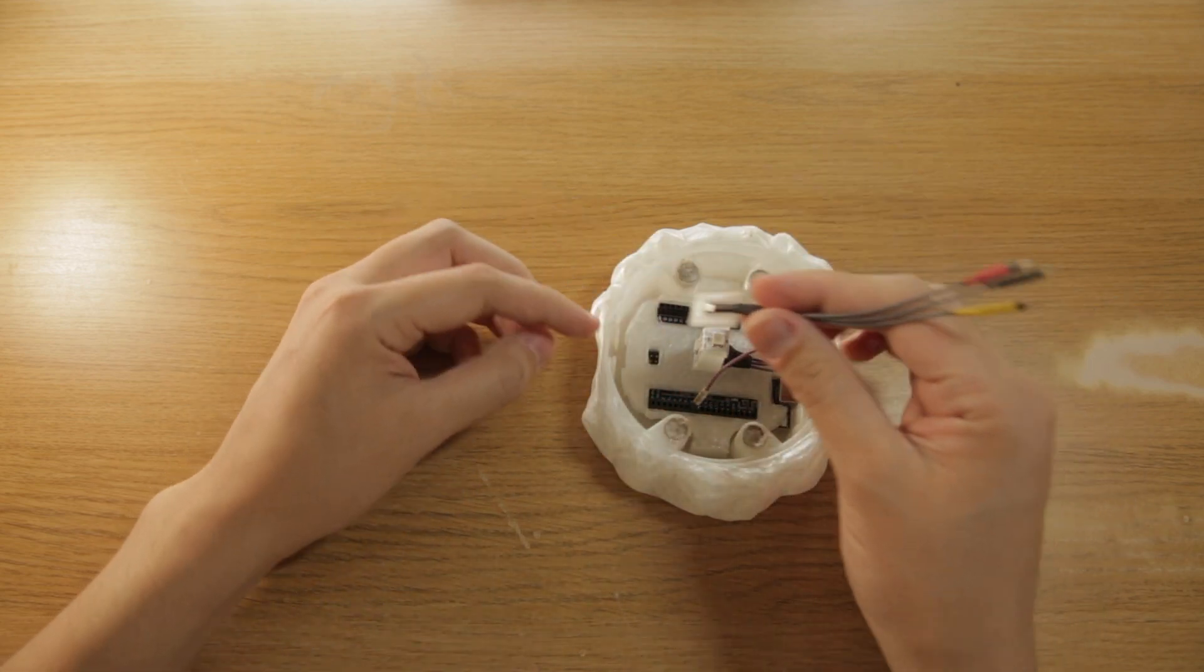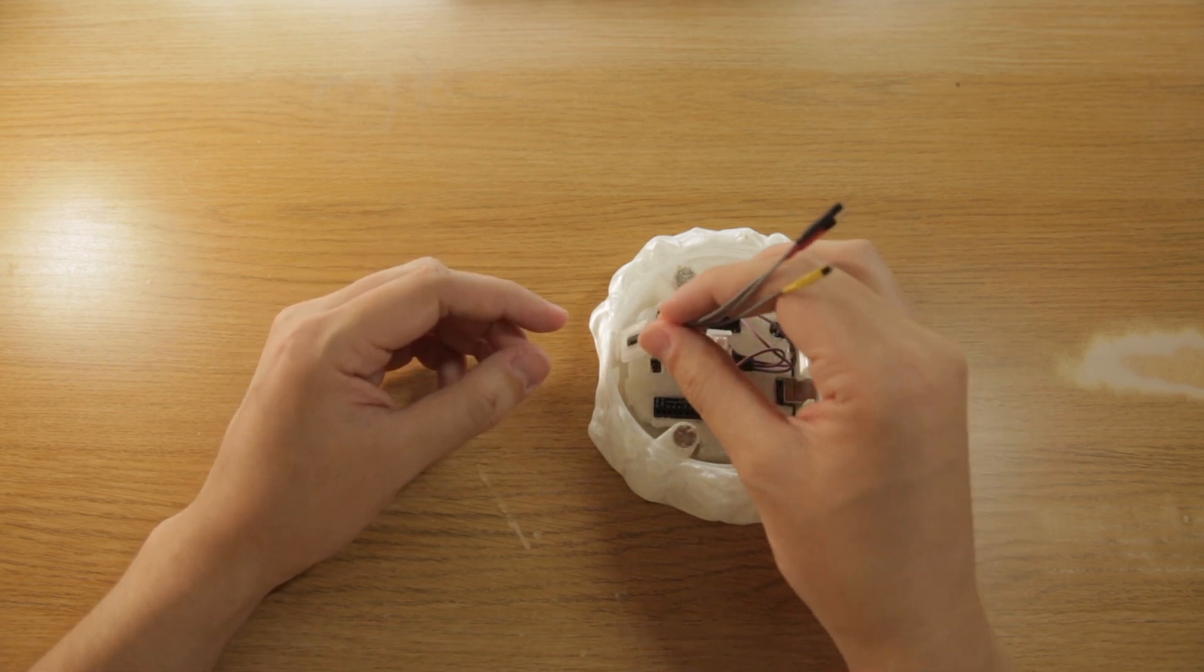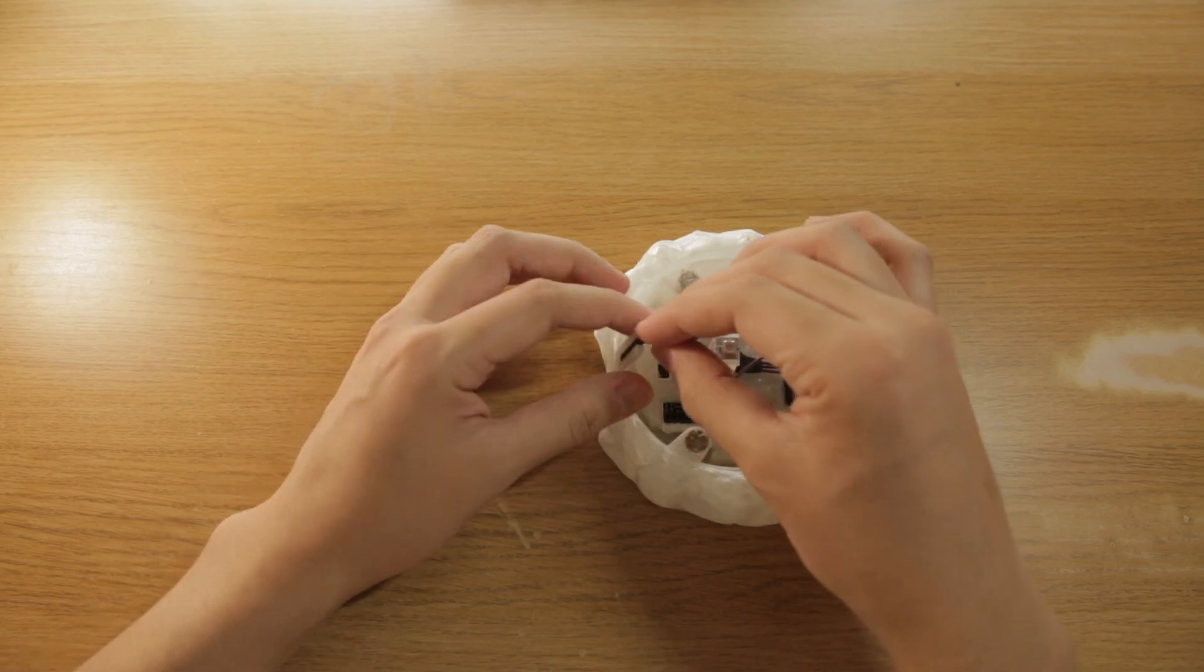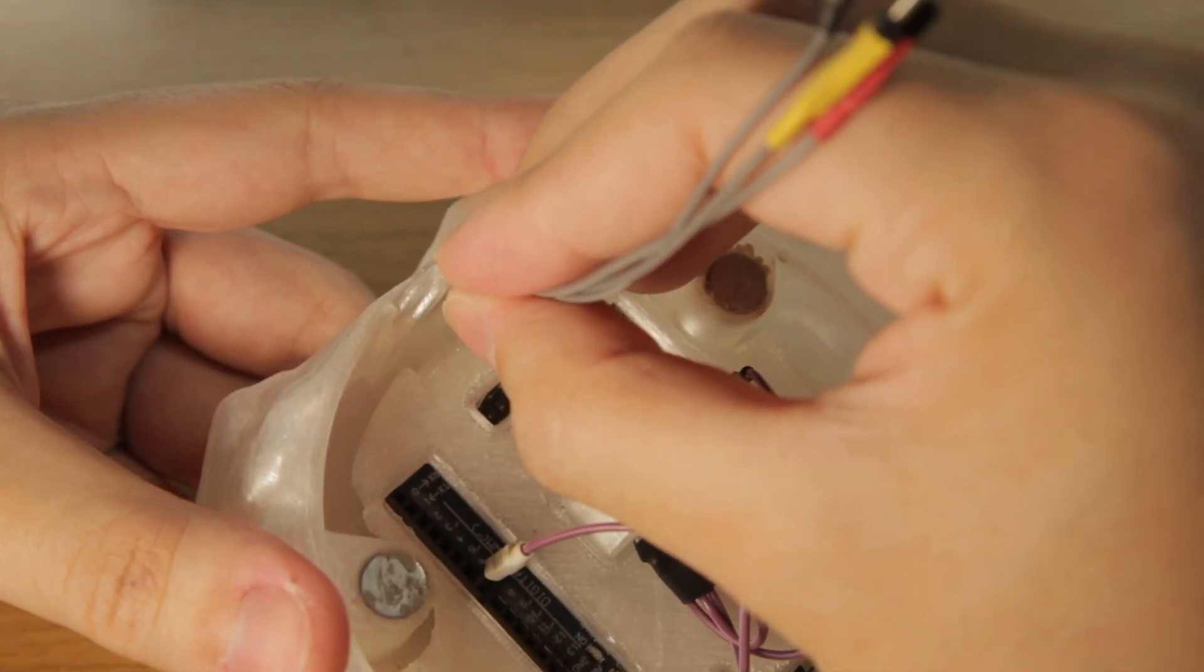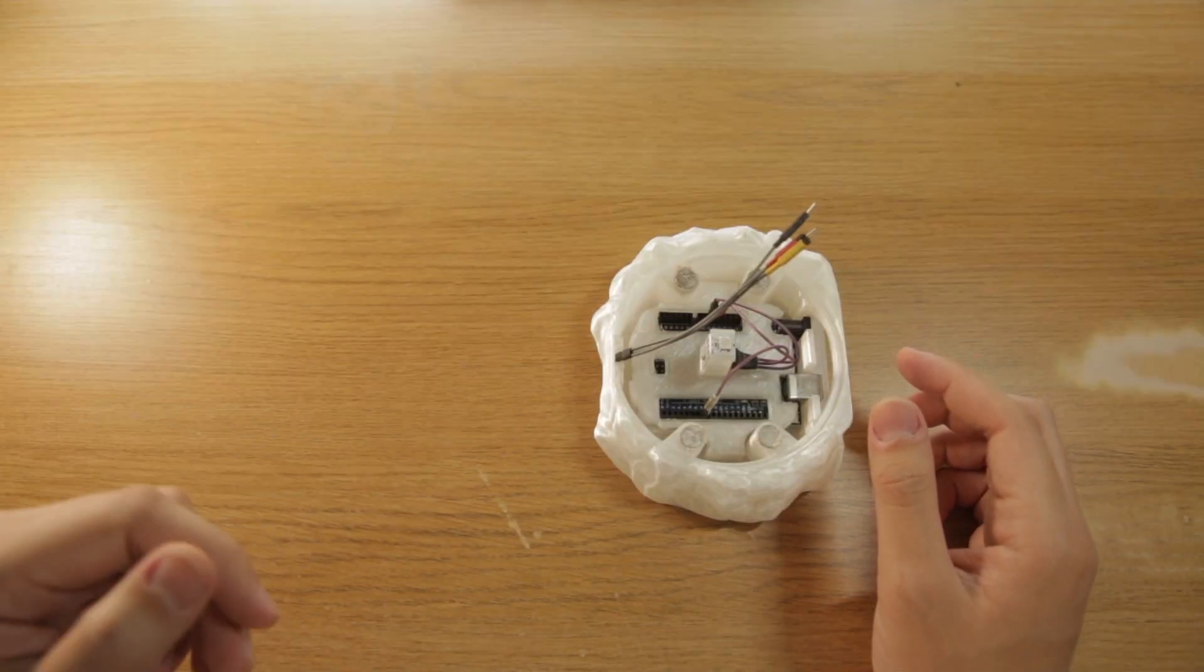We're going to be inserting this into the base with the module facing outwards. This slides into the corresponding clip at the front here. It might be a little snug, so press down gently, but be sure not to bend the wires too much. Just like that. That is going to be where you tap your wand to activate the light.